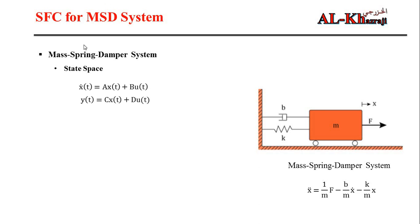In state space modeling we have two equations. The first is x-dot, the derivative of the state, which has two terms: the relationship between the derivative of the state and the state itself — represented by matrix A, the dynamic matrix — and the relationship between the derivative of the state and the input, represented by matrix B. The output equation y relates the output to the state via matrix C, and D represents any direct relationship between output and input.